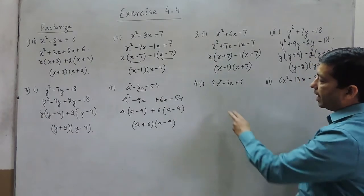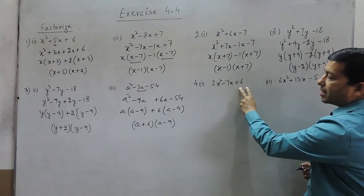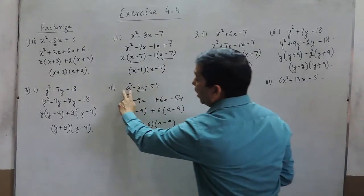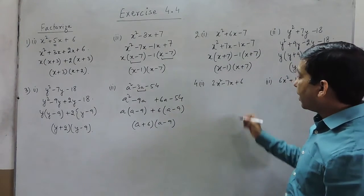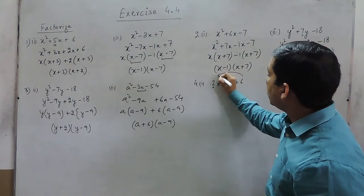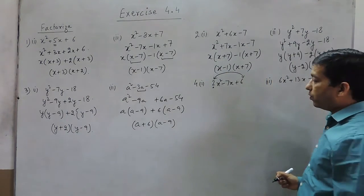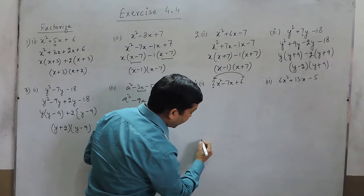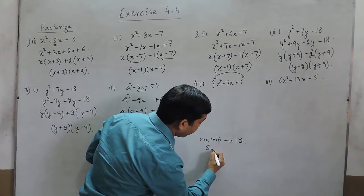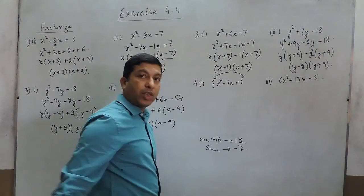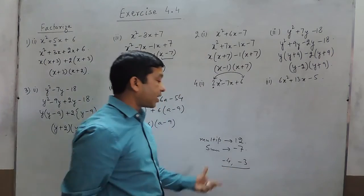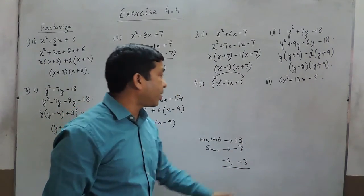In question number 4, part a, we have 2x squared minus 7x plus 6. Important to note: until question 3 the coefficient of the first term was 1, but here it is 2. So the multiplication target is not 6 but 6 multiplied by 2, which is 12. We need two numbers where the multiplication is 12 and the sum is minus 7 — those are minus 4 and minus 3.